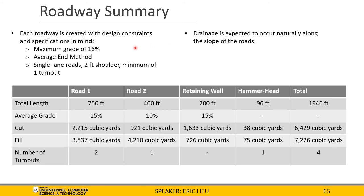To summarize our roadway, each roadway is created with design constraints and specifications in mind. The requirement is for a maximum grade of 16%, and we used the average end method to determine cut and fill. These are single-lane roads with two shoulders on each side with a minimum of one turnout, and drainage is expected to occur naturally along the slope of the road. We have a total length of about 1,900 feet, with an average grade for road 1 of 15%, road 2 of 10%, and the retaining wall of 15%. We have a total cut of about 6,000 cubic yards, a total fill of about 7,000 cubic yards, and a total of four turnouts including the hammerhead turnout.